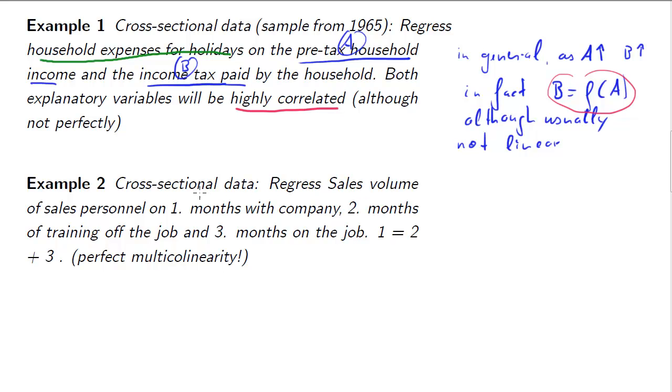In example two, we're looking at an example of perfect multicollinearity. It's much less often that we see that. Let's say our dependent variable is the sales volume of individuals in a company, and we regress that on the months with the company, the months of training on the job, and the months on the job. The way this is set up is such that variable 1, how long you are with the company, is really split into variables 2 and 3.